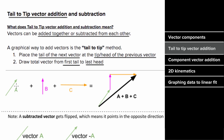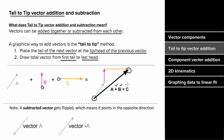If you were adding vectors a, b, and c, you place the tail of vector b at the head of vector a, then place the tail of vector c at the head of vector b. Once done, you draw the total vector going from the first tail to the last head, and that total vector represents the vector sum of all three vectors.